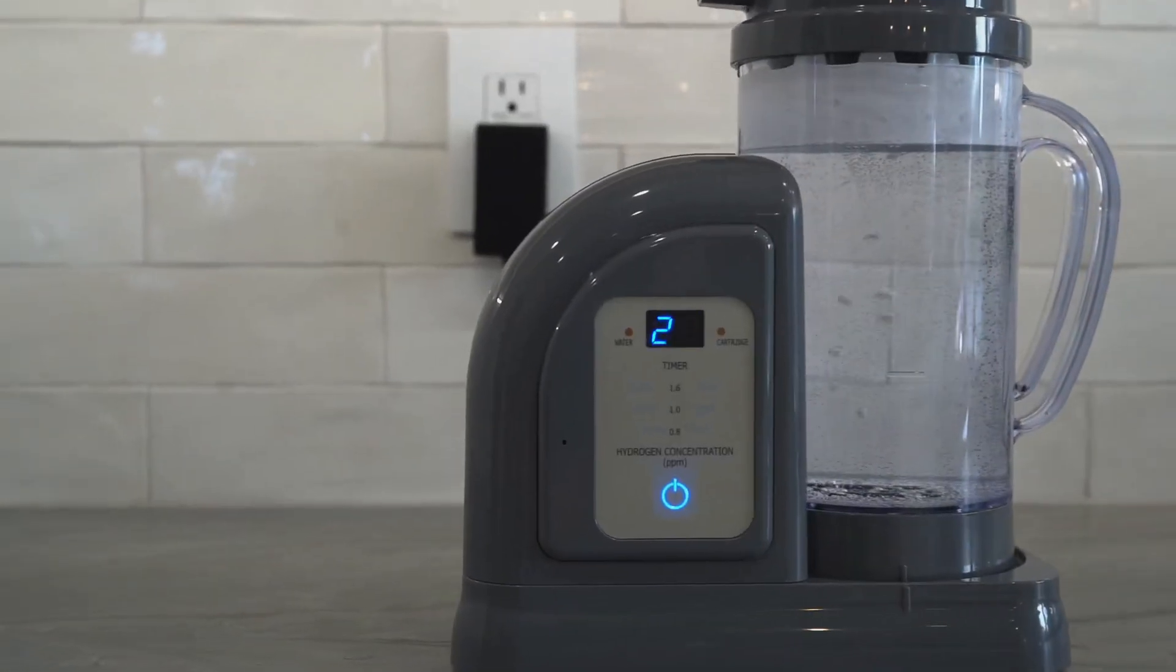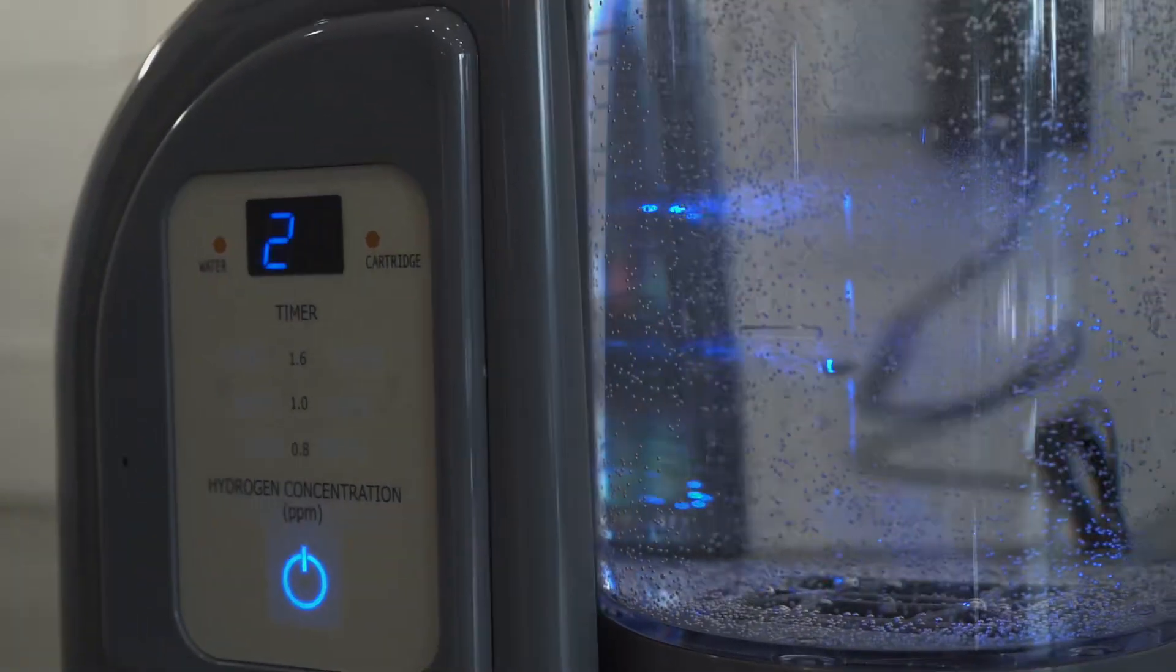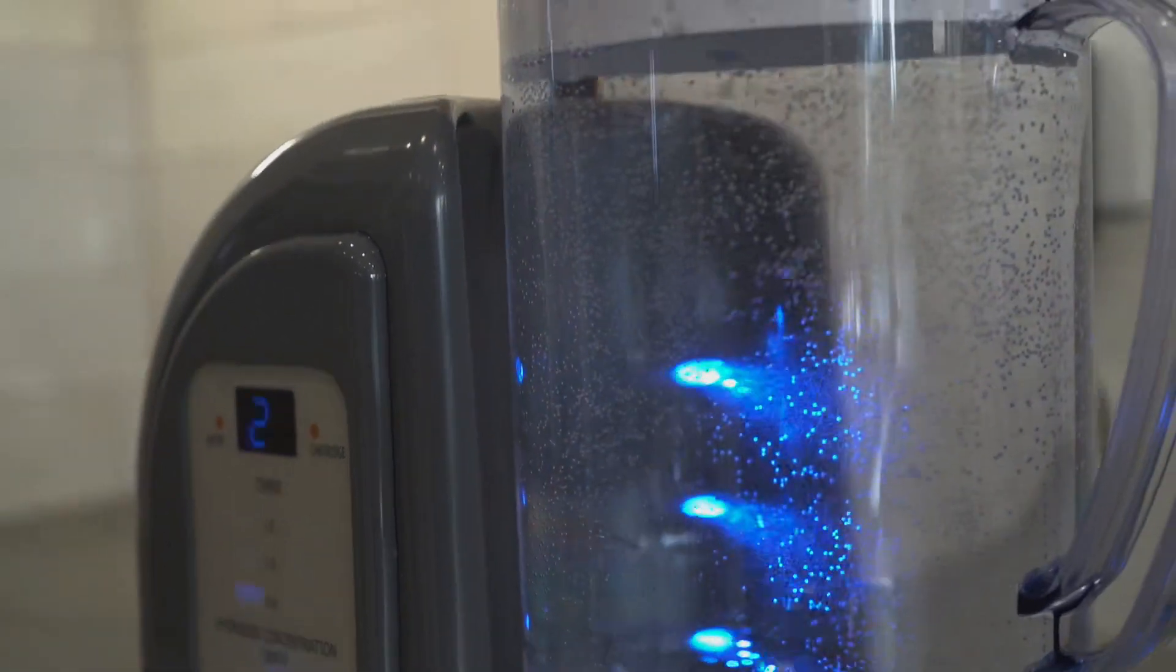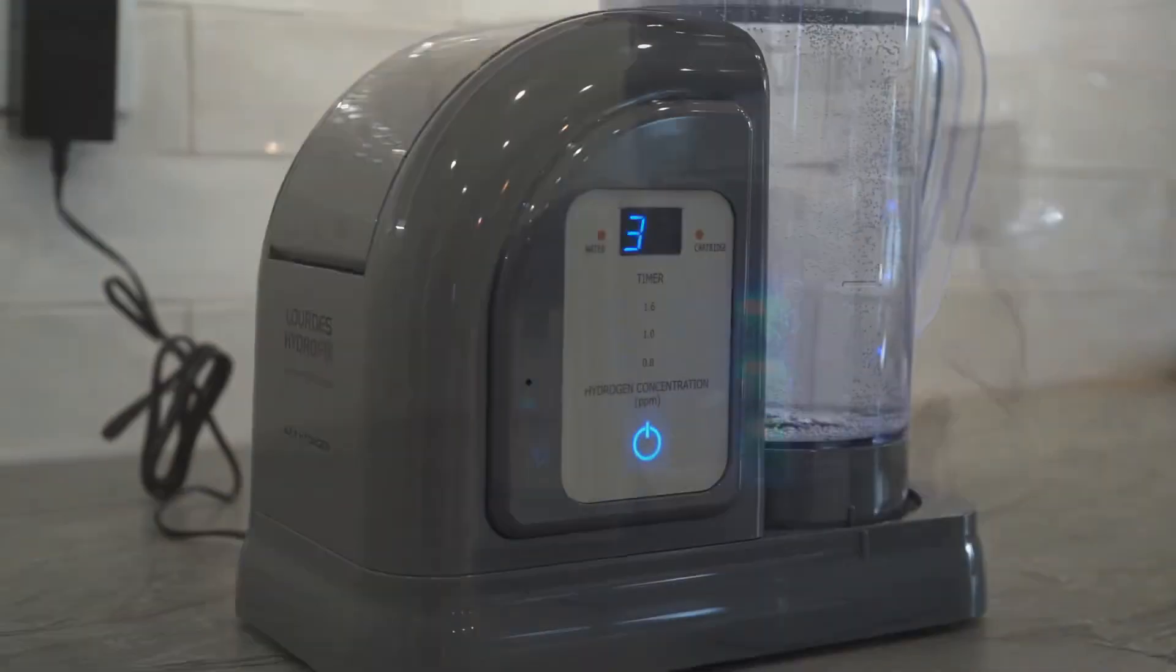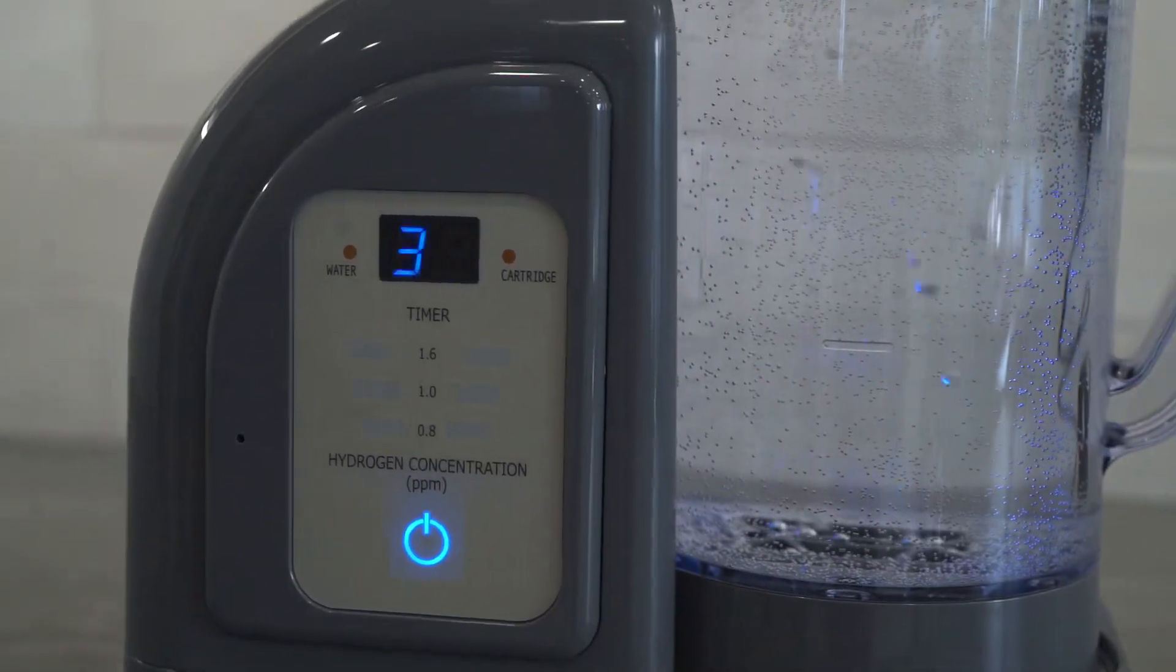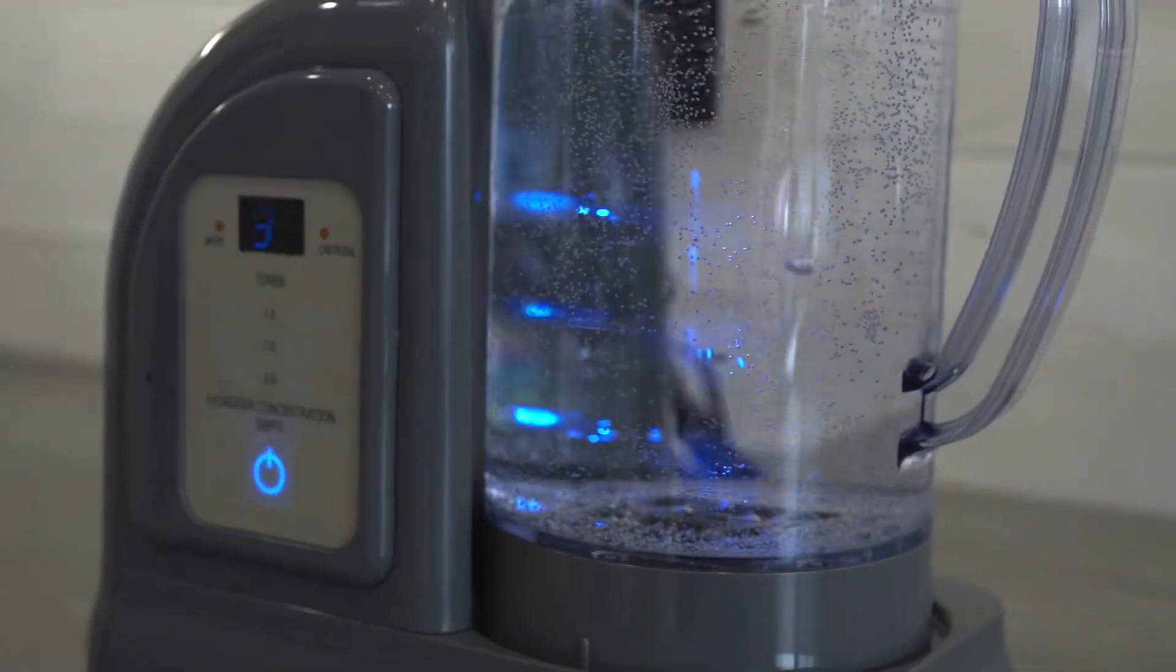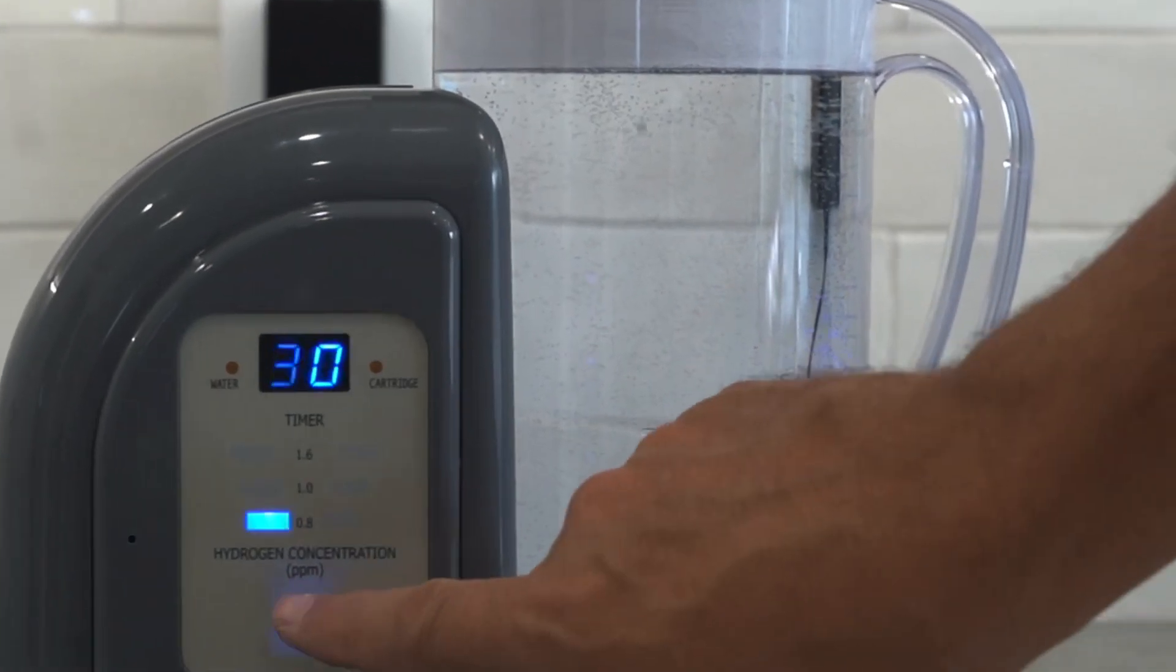Remember, running the 90-minute mode will not increase the level of hydrogen in the water. After the membrane is prepared, the 90-minute mode is used only for a 90-minute inhalation session. When your device is new, or if it hasn't been used for a while, the membrane will be dry and will produce a slightly lower amount of hydrogen. The hydrogen production will continue to increase with use and will reach full production after a few uses.